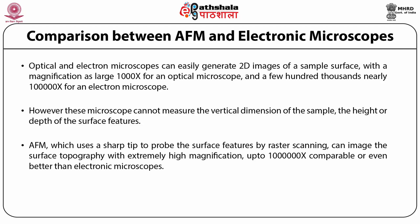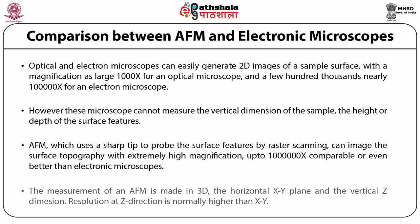AFM, which uses a sharp tip to probe the surface features by raster scanning, can image the surface topography with extremely high magnification up to about one lakh times, comparable to or better than an electron microscope. Measurement in AFM is made in three dimensions — the horizontal xy plane and the vertical z plane. The resolution in the z direction is normally higher than what is obtained for the xy plane.